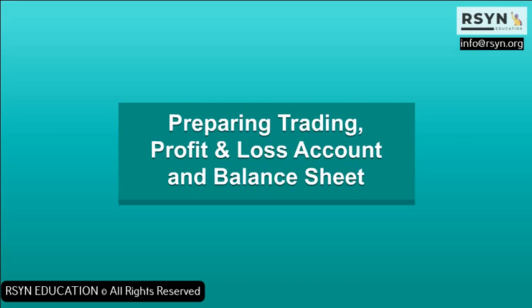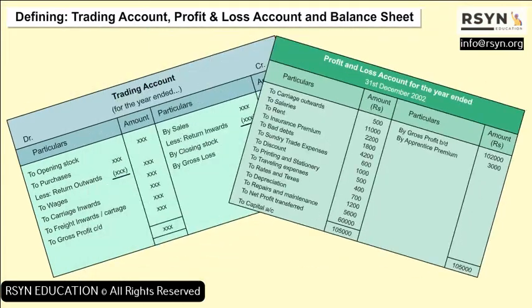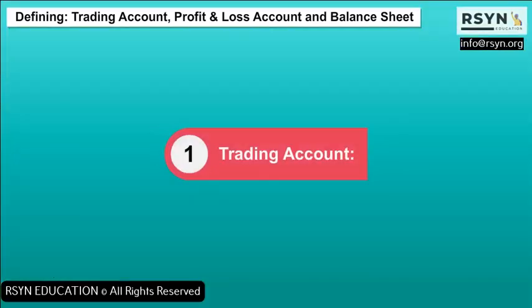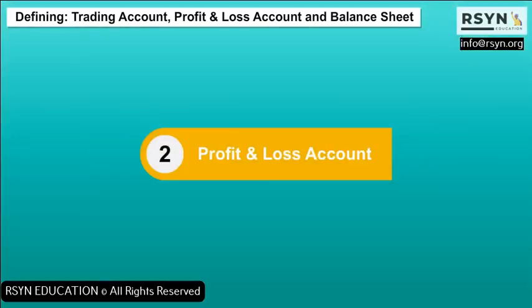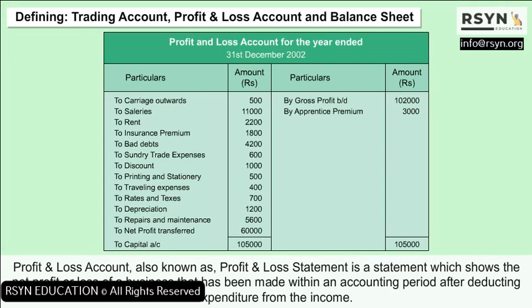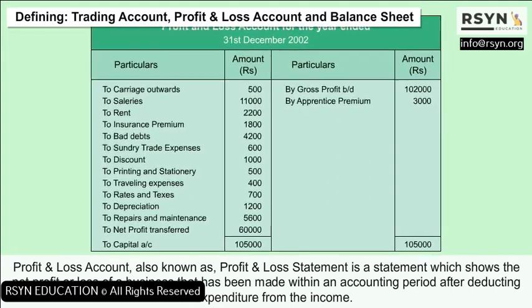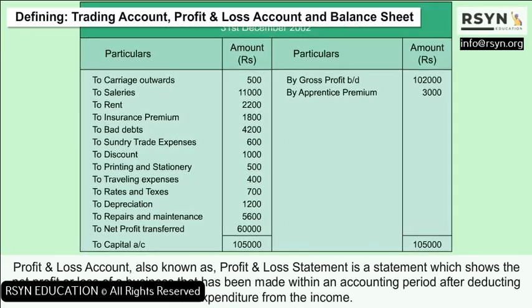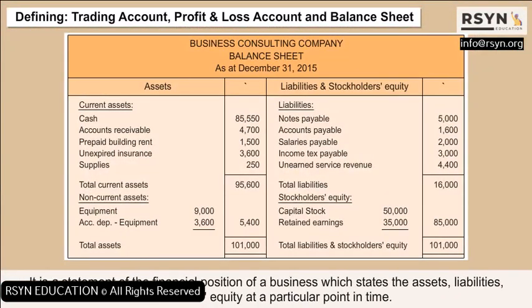Preparing Trading, Profit and Loss Account, and Balance Sheet: 1. Trading account — it is an account prepared to know the gross profit or gross loss of a business concern. 2. Profit and loss account — also known as profit and loss statement, it is a statement which shows the net profit or loss of a business made within an accounting period after deducting all expenditure from the income. 3. Balance sheet — it is a statement of the financial position of a business which states the assets, liabilities, and owner's equity at a particular point in time.